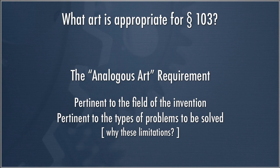But even though art is prior art under Section 102, it is not necessarily good art for purposes of Section 103. That's because the Federal Circuit — which appears to have been at least somewhat endorsed by the Supreme Court in KSR — has adopted what it describes as the analogous art requirement. The only art that's available as good prior art for Section 103 is that which is pertinent to the field of the invention or pertinent to the types of problems to be solved.